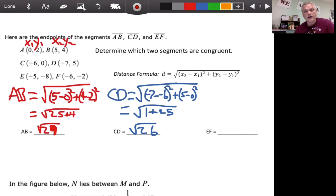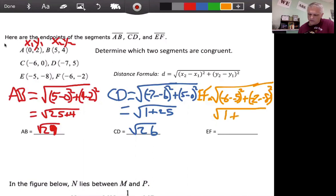Okay. So, let's set up EF with the distance formula. Okay. There's that setup. So, negative 6 minus negative 5 is negative 1. Squared is 1. Okay. Negative 2 minus negative 8 is 6. 6 squared is 36. Okay. 1 plus 36 is 37. So, what can we say about these three segments and their congruence? I can say that none of them are congruent. Didn't see that one coming, huh? Big shocker. Okay. Let's look at this last question down here.